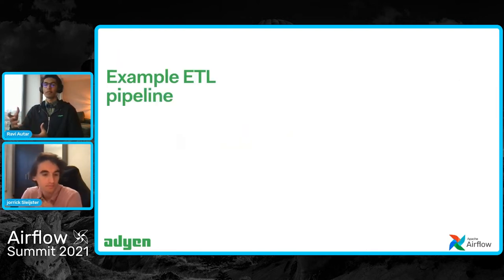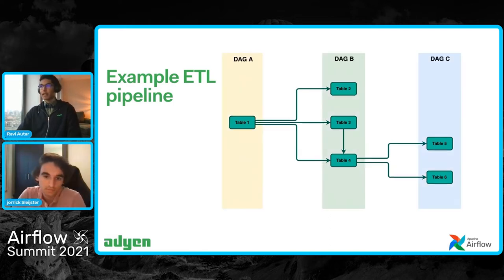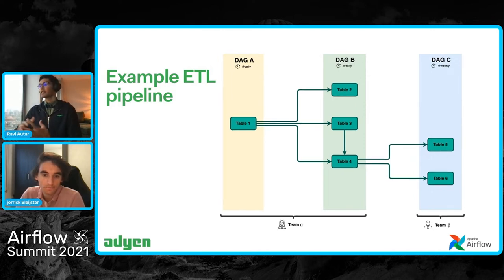To make these challenges more concrete, here's a small ETL pipeline example. From left to right, table one has downstream dependencies for table two and table three, and table four, which in turn has downstream dependencies on table five and six. These tables are generated through different DAGs — DAG A, DAG B, and DAG C. DAGs can have different scheduling intervals: DAG A and DAG B are on a daily schedule and DAG C on a weekly schedule. These DAGs can also be owned by different teams — DAG A and DAG B by team alpha and DAG C by team beta.